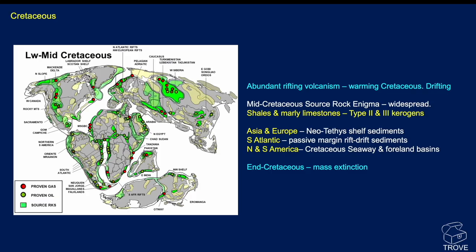In the interest of time, going straight to the Cretaceous: it was a period of rifting, the breaking up of the Pangaea supercontinent, with a lot of rifting and volcanism. Things were warming up through the Cretaceous, perhaps in part due to the volcanism — this is the start of the drifting phase. Mid-Cretaceous source rocks are enigmatic insofar as they are hugely widespread. They tend to be type 2 and type 3 kerogens — mixed to gas-prone kerogens — so we see that they produce both oil and gas. By the end of the Cretaceous, we come to the mass extinction phase — not just the dinosaurs, but a lot of marine life also became extinct at that time.